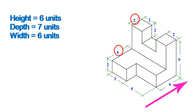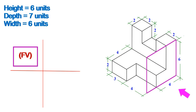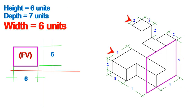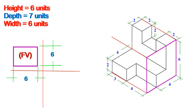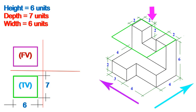When we apply first angle projection, the front view (FV), looking from the front, shows the height and width of the object — 6 units by 6 units. The depth is hidden because it is perpendicular to our sight. In the top view (TV), when we look from the top, the width and depth — 6 units by 7 units — are visible, while the height is not seen. According to the first angle rule, this view is drawn below the front view.